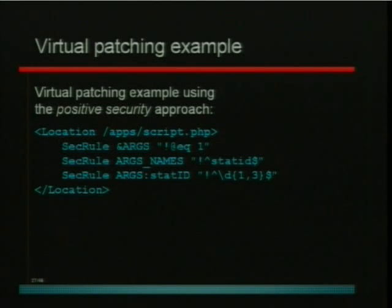So this is a perfect example of a positive security model that works really well, because you ensure that you only get this one parameter and the only thing you get in the parameter is a number, and then you're safe. If someone attempts to perform an injection here, it's going to have a really tough time because it won't be able to use any characters apart from the digits.